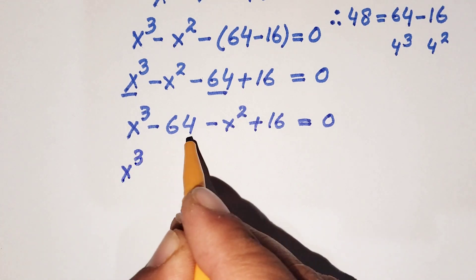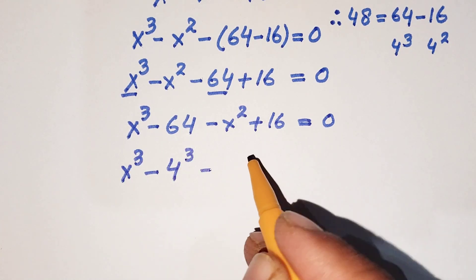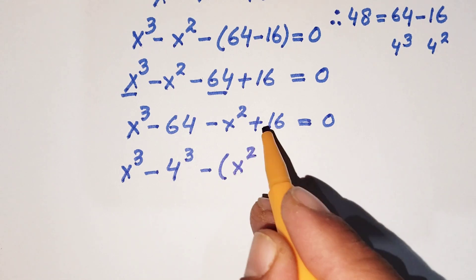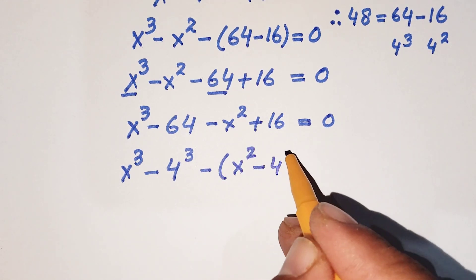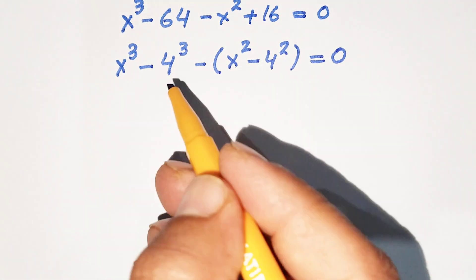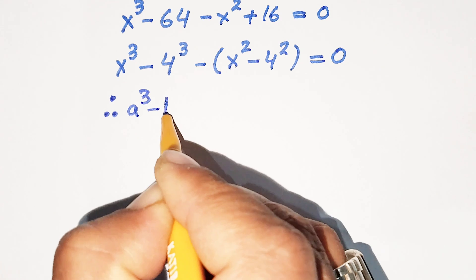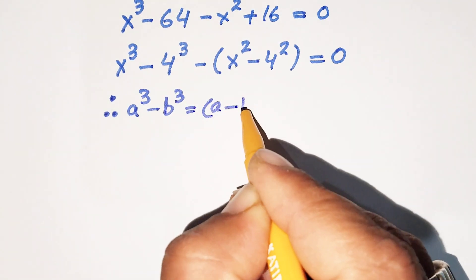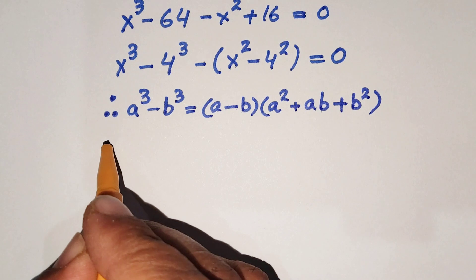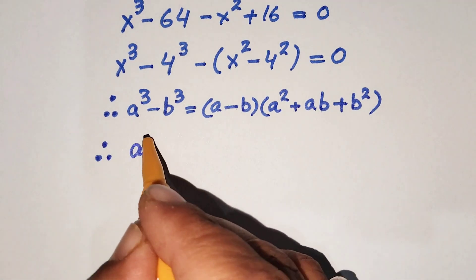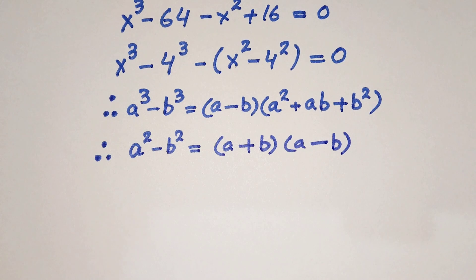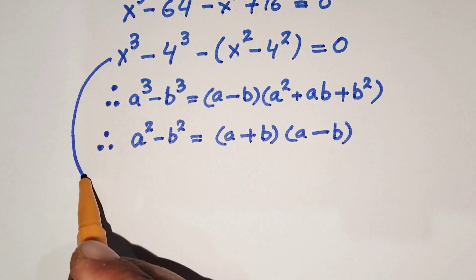Here x cubed minus 64 can be written as x cubed minus 4 cubed. Taking negative 1 as common from the second group gives minus (x squared minus 4 squared) equal to 0. We now apply two algebraic formulas: a cubed minus b cubed equals (a minus b)(a squared plus ab plus b squared), and a squared minus b squared equals (a plus b)(a minus b).